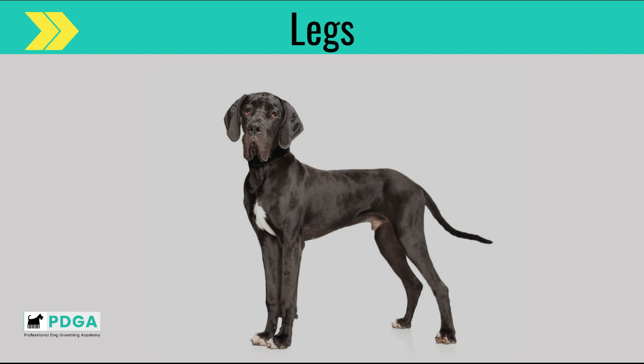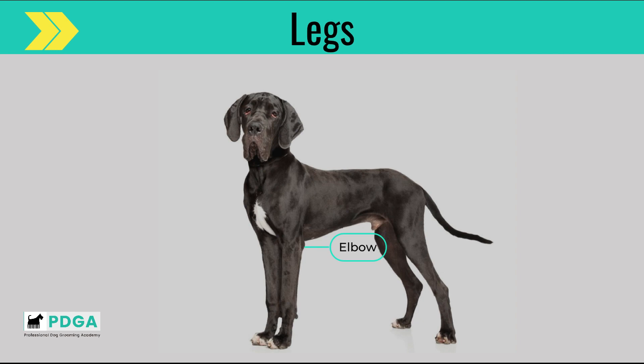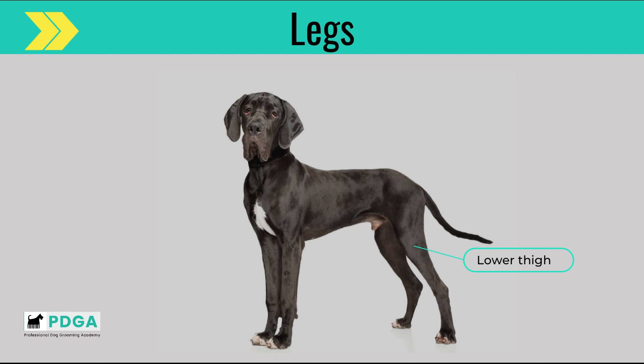Next, let's discuss the legs. The upper arm is found on the foreleg, right below the shoulder. The forearm is the long bone that runs after the elbow on the foreleg. The elbow is found on the foreleg and is the first joint located below the chest. The upper thigh is the part of the dog's leg situated above the knee on the hind leg. The lower thigh is the part of the hind leg beneath the knee to the hock. The stifle is also referred to as the knee — it sits on the front of the hind leg in line with the abdomen.